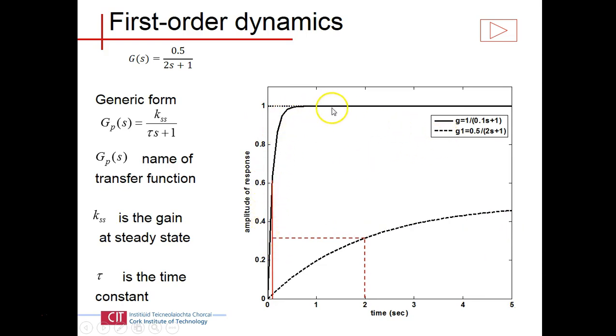The solid line gives another example where the transfer function is different: 1 over 0.1 s plus 1. My gain is 1, so the final value of the output and input are equal. The time constant: 63% of 1 is 0.63, dropping down, this is my time constant which is 0.1 seconds. So those are the two parameters.